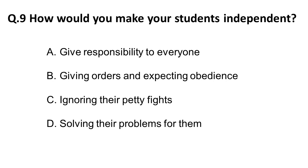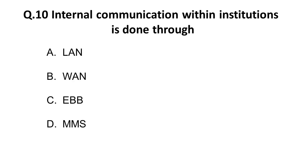The ninth question: how would you make your students independent? If you have to make someone independent, you should give them responsibility. Unless and until responsibility is inferred on the individual, they won't become responsible. So the correct answer is: to make students independent, one should give responsibility to everyone — referring to the students.